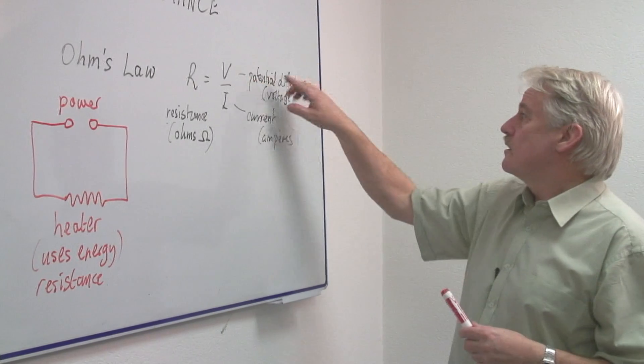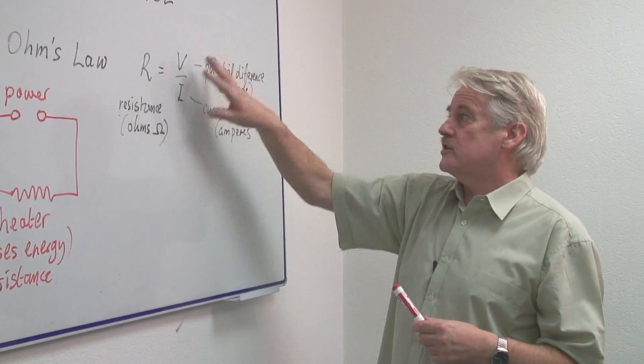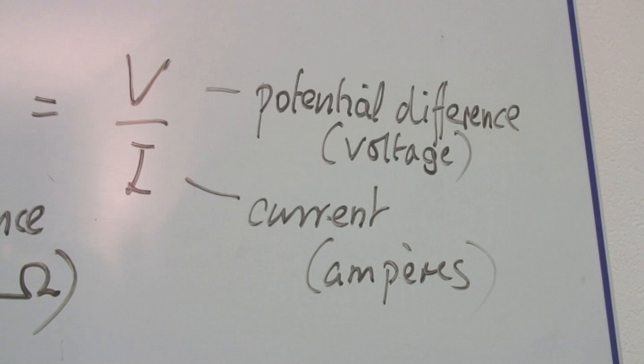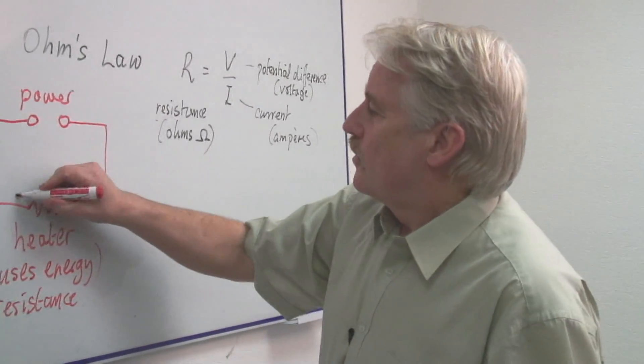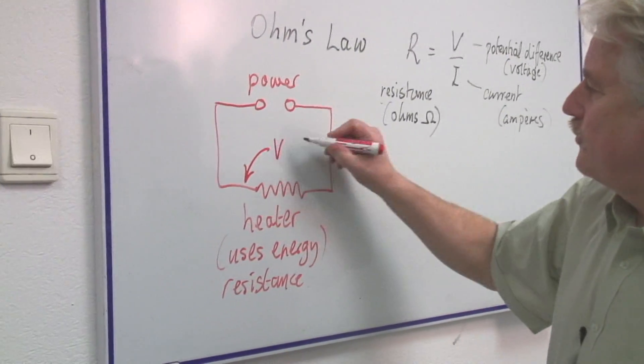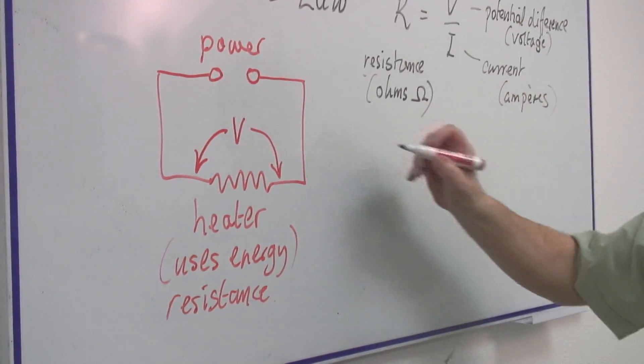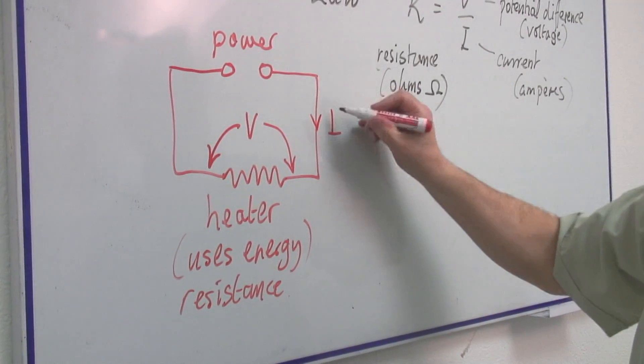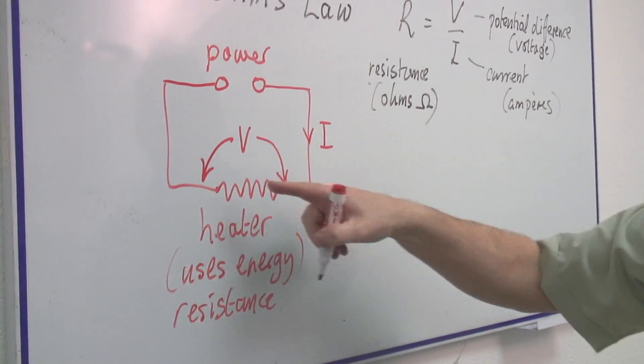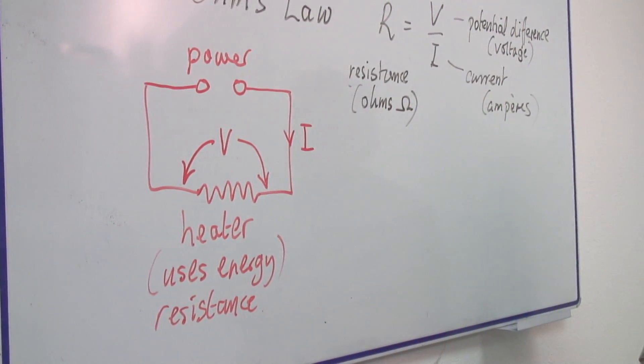Now the first thing is we have two quantities in the circuit which we have to measure. We have what we call the voltage, V, or the potential difference more correctly. And we have the current I. I is the current. We can measure both of these quantities with meters.